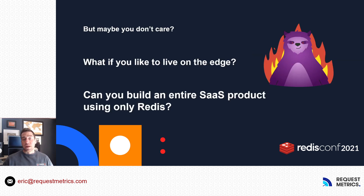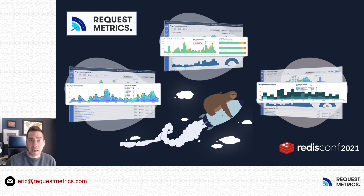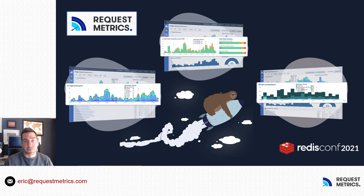But because Redis is so fast and the operational complexity is so low, what if you wanted to build an actual product using only Redis? We did it — it's called Request Metrics and it's a real user monitoring performance tool. You install a little JavaScript snippet on your site, and as your users interact with your page, we watch how fast the page really loaded for them or how fast those endpoints are returning data, and we ship it to our service where we aggregate it and give you a nice UI.